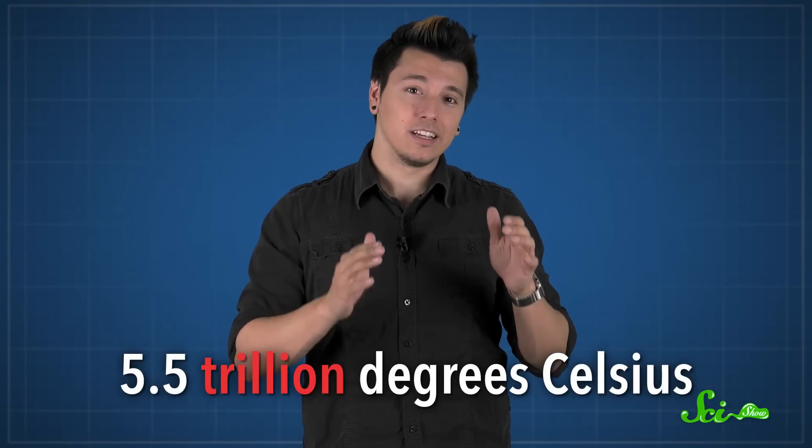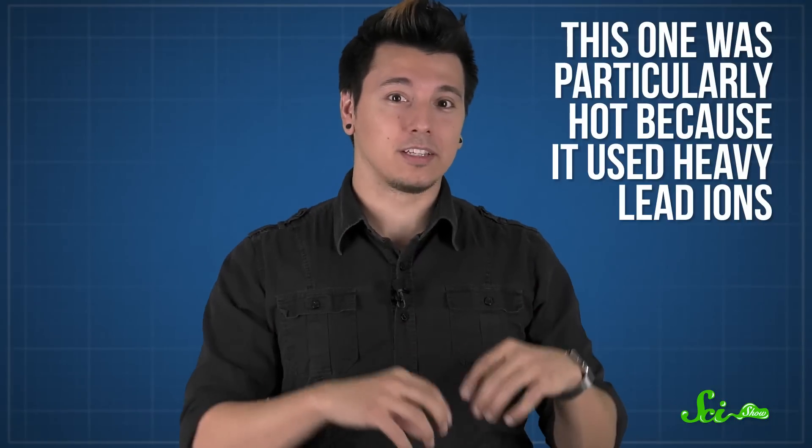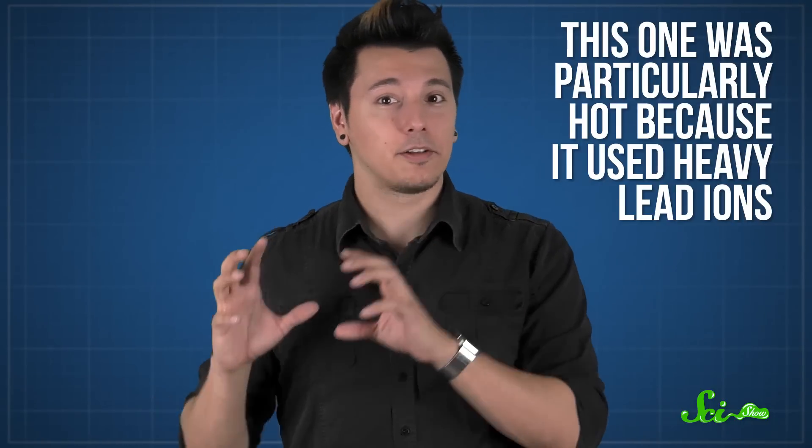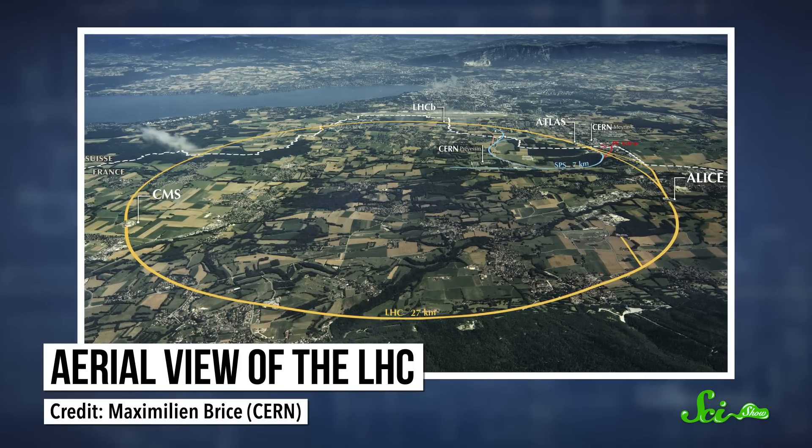That fireball was a whopping 5.5 trillion degrees Celsius. Particle accelerators have created other hot explosions before, but this one was particularly hot because it used heavy lead ions instead of lighter particles. We don't have any official results yet about quarks and gluons, but the Large Hadron Collider is our best and most powerful resource for recreating the conditions of the early universe and creating a lot of heat.